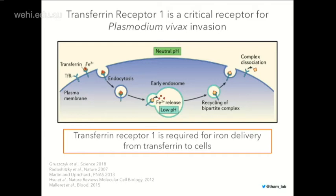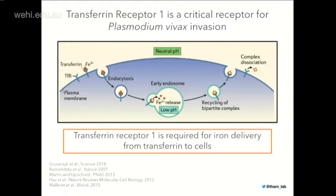Transferrin receptor 1 is an essential protein on red blood cell surfaces and many other cell types, involved in mobilizing iron into cells. Transferrin receptor sits on the membrane, binds transferrin — which carries iron — and through endocytosis, fusion with the early endosome, and a pH change, the iron gets released into the early endosome, followed by recycling of the complex. From an infectious perspective, transferrin receptor is used as an entry receptor not only by vivax but also by New World hemorrhagic arenaviruses and hepatitis C — pathogens co-opting this essential protein to enter cells.